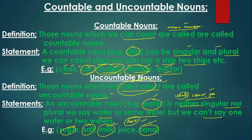For liquids, we have milk — we cannot say two milks, seven milks, or five milks. Similarly, juice — we cannot say he drinks two juice or three juice. These are uncountable nouns.